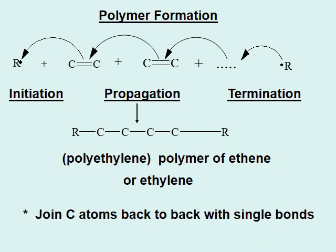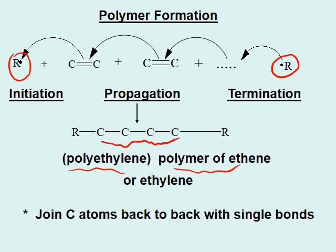Polymer formation happens when a number of alkenes are bonded back to back. You need something to initiate or begin the reaction, and then it keeps happening. All these carbons get bonded back to back, and this is how you get the polymer of ethylene, which is called polythene.